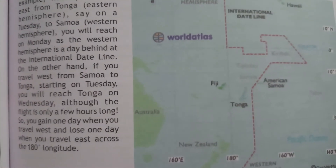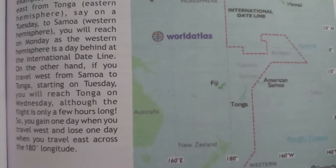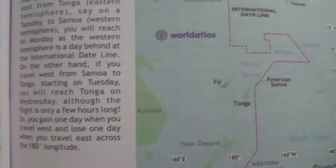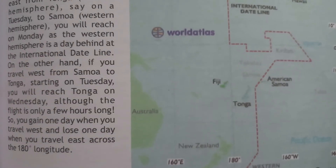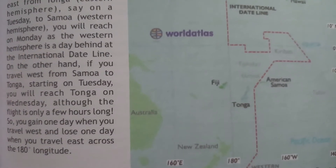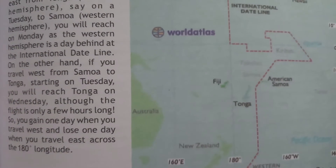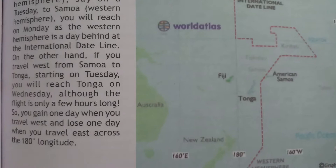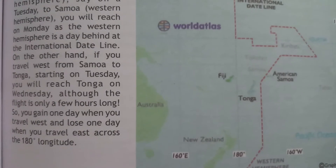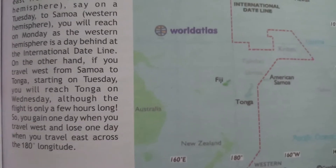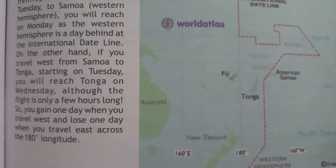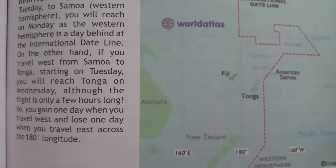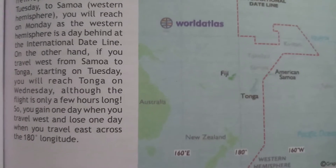On the other hand, if you travel West from Samoa to Tonga starting on Tuesday, you will reach Tonga on Wednesday. Going in that direction, you gain a day when you cross the date line.